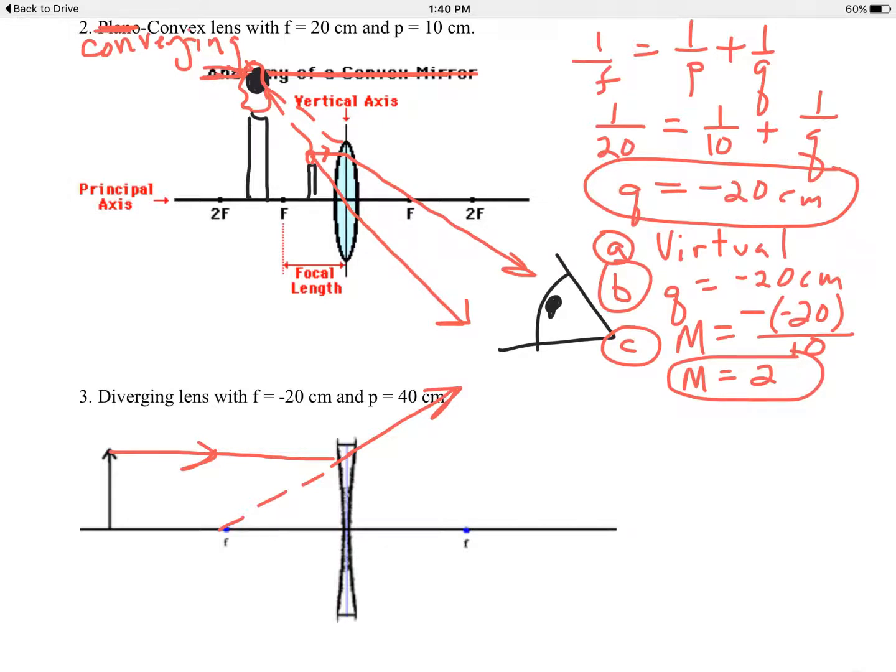And then once again, almost a fail-safe second ray to draw is step number 3, the one that goes through the center of the lens. If I draw the ray through the center of the lens, which does not bend, it's just a straight ray, and that's enough to solve the problem.